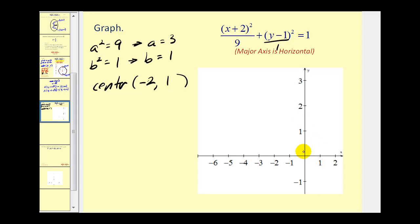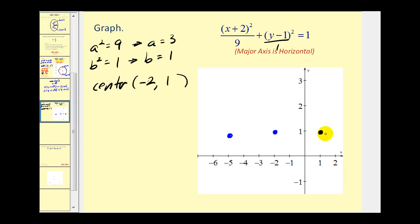Let's graph the center at (−2, 1). The major axis is horizontal and a equals three, so we go right three units and left three units — our major axis is six units long. Since b equals one, we go up one unit and down one unit. Our ellipse passes through these four points — let's sketch it.